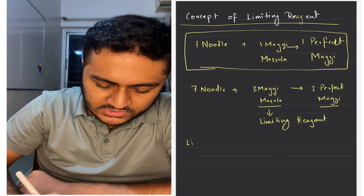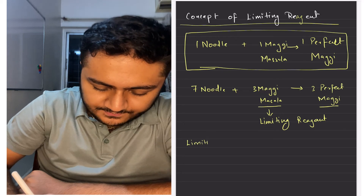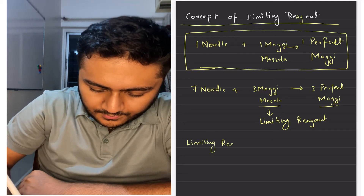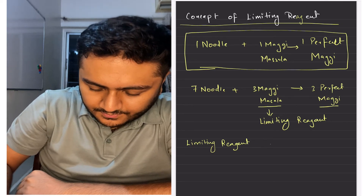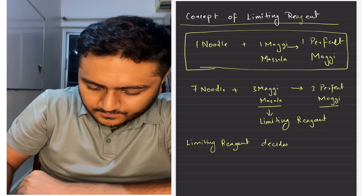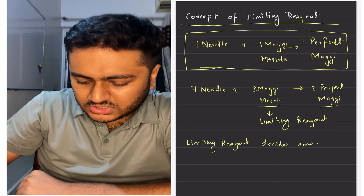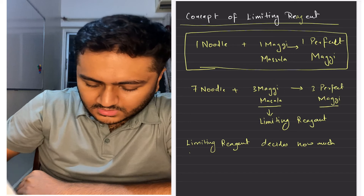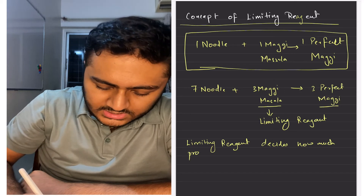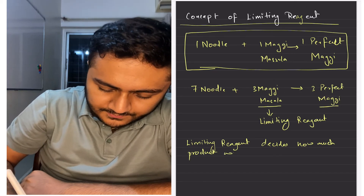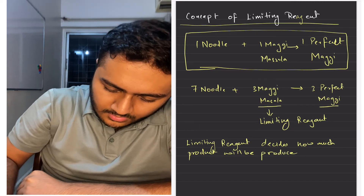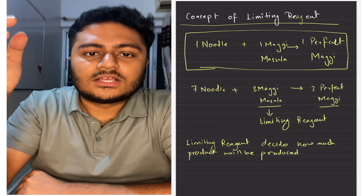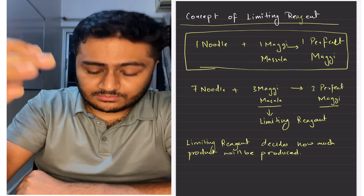The limiting reagent decides how much product will be produced. Now let's take another example.